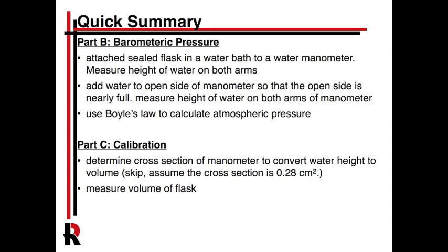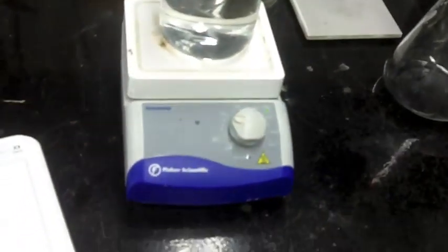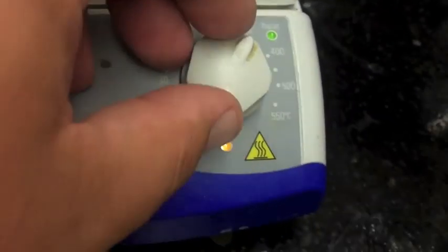Part C is a calibration that I would do at the very end. You can skip the part in the manual about the manometer cross section - just use 0.28 square centimeters, as that's consistent across about five manometers I've measured. You will have to measure the volume of the flask by filling it with water and measuring the mass of that water to get the volume the gas is occupying. Note that the balances may be too heavy for the full volume, so measure in pieces and add them together.